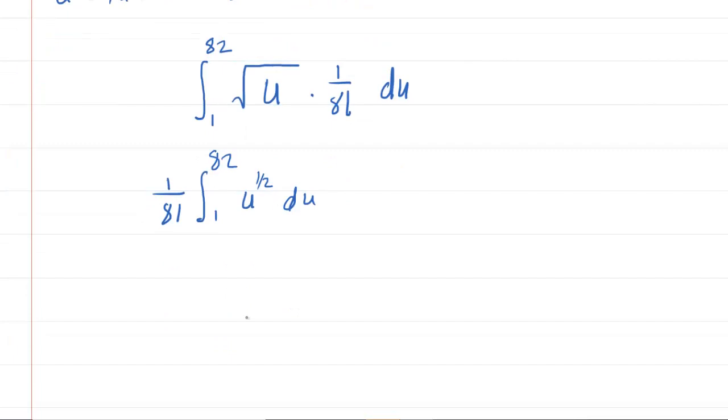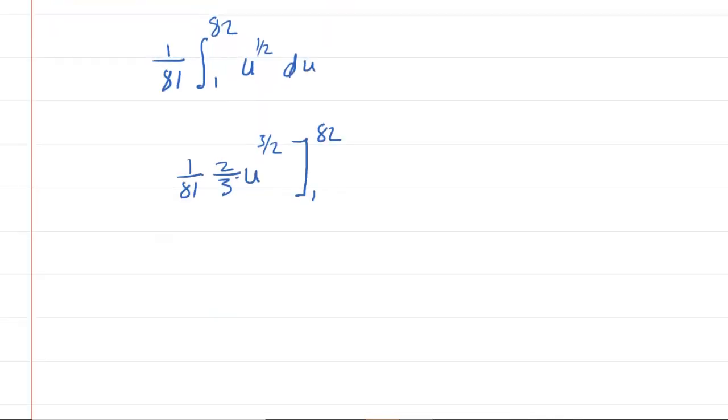Now we're integrating. We'll add one to the exponent making it u to the power of three halves, then multiply by the reciprocal, which is two thirds. Don't forget about the one over 81 in front, and we're evaluating from one to 82. We can simplify by multiplying the numerators and denominators, giving us two over 243. Then plug in the upper bound 82 to the three halves minus the lower bound one to the three halves.